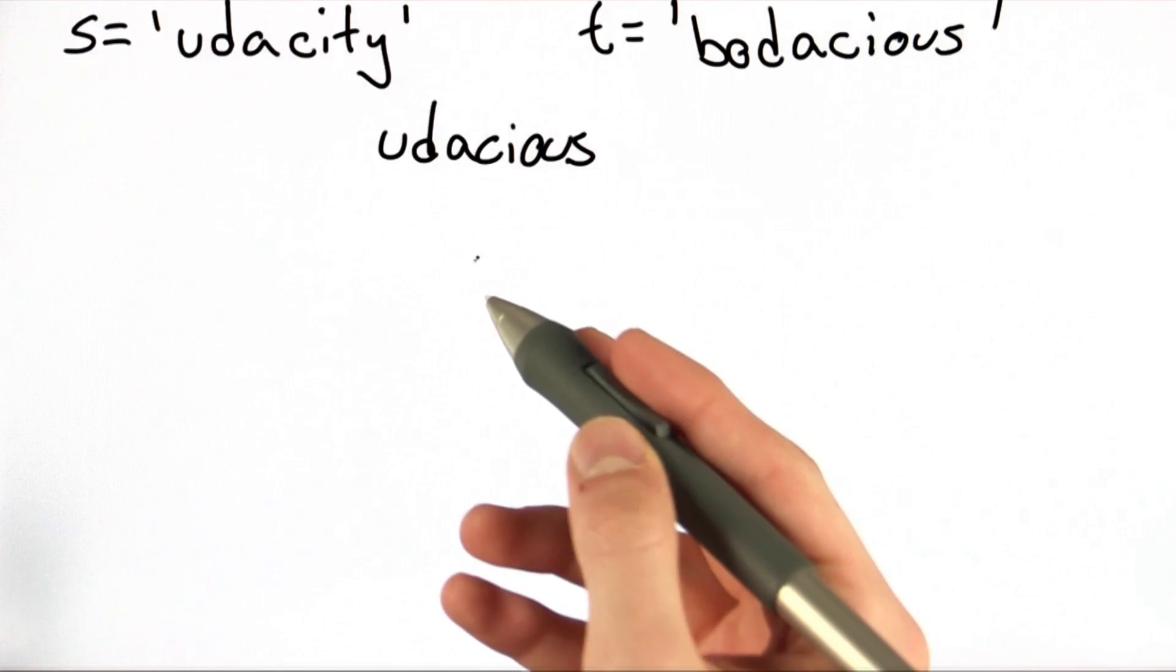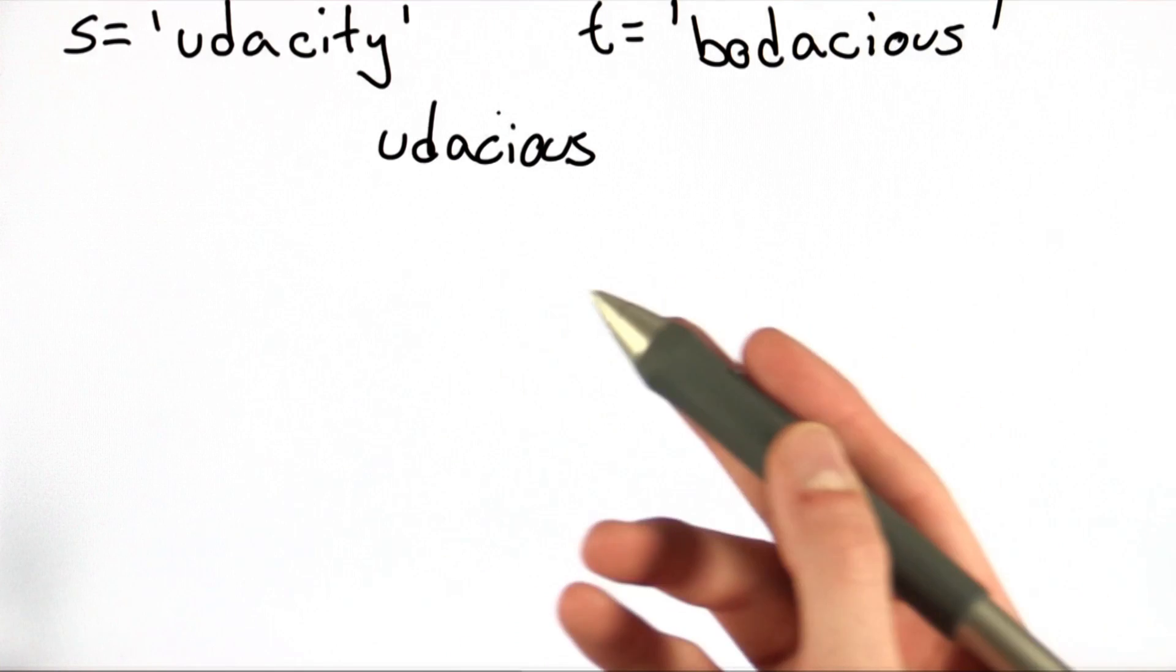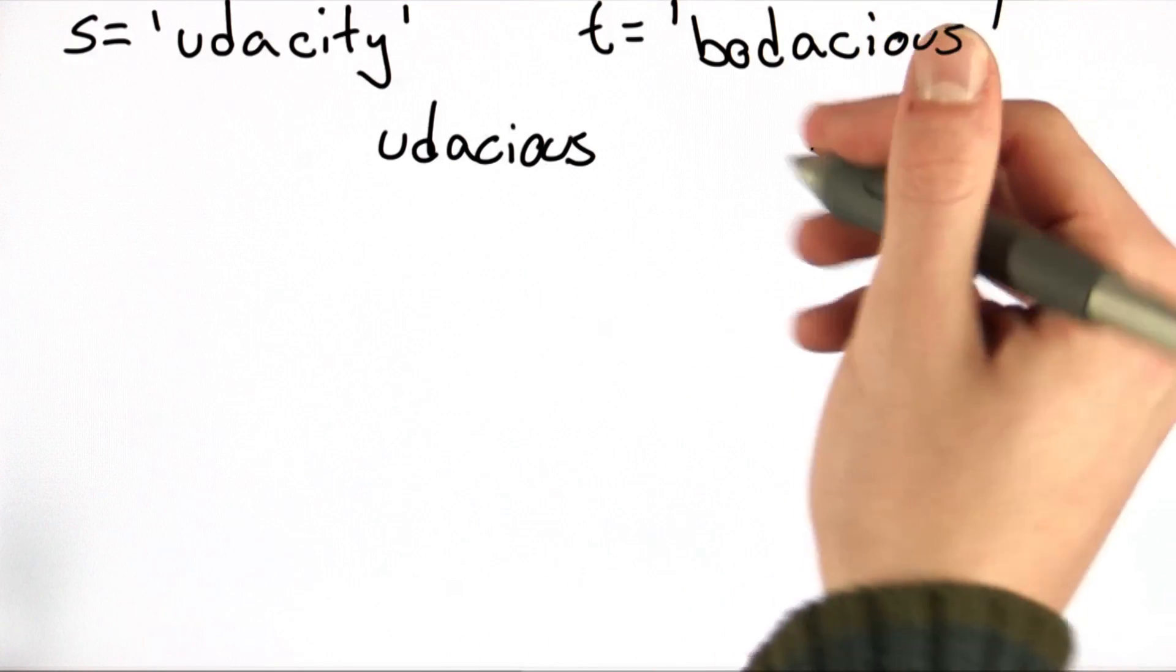Given two strings, s and t, we want to print out eudacious without using any quotes. And we're going to do that by using the subsequence operator, the colon.